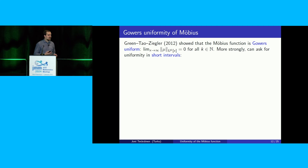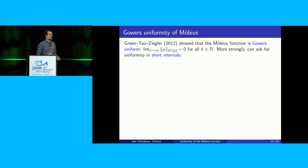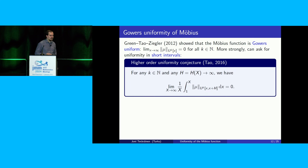In 2012, Green, Tao, and Ziegler showed that the Möbius function is Gowers uniform, meaning that if you take the U^k_X Gowers norm of the Möbius function, it converges to zero as x goes to infinity. This was a key ingredient in their work on linear equations in the primes.